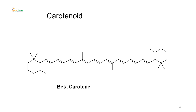Then comes carotenoid. It has an extended conjugated system — conjugated system meaning double bond, single bond, double bond, single bond — with CH₃ appendages hanging on all sides. But those CH₃ groups do not act as oxochrome; it is the extended conjugated system which brings in the color. Beta-carotene, extracted from carrots, is one of the examples of the colorant molecule.